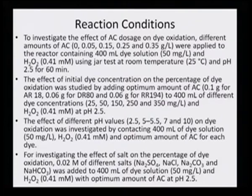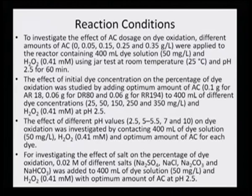The effect of initial dye concentration on the percentage of dye oxidation was studied by adding optimum amounts of activated carbon — 0.1 g for AR18, 0.6 g for DR80, and 0.6 g for RR194 — to 400 mL of dye solutions at concentrations of 25, 50, 150, 250, and 350 mg/L, with 0.41 mmol hydrogen peroxide at pH 2.5. When studying the effect of initial dye concentration, all other parameters — hydrogen peroxide concentration, temperature, and pH — were kept fixed; only the dye concentration was altered.